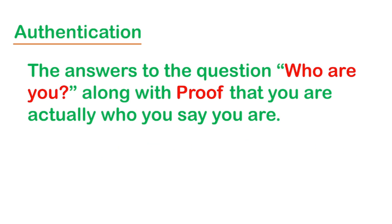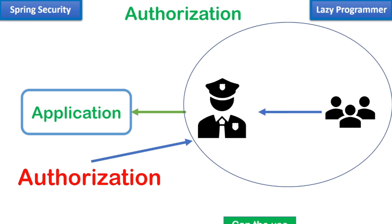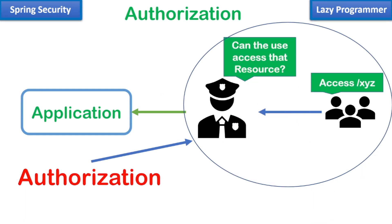To sum up what is authentication: it is the answer to the question who are you, along with the proof that you are actually who you say you are. Now let's move to authorization. After asking who are you, when Spring Security checks what do you want, and based on that decides if you are allowed to access that requested resource or not — the answer will be in the form of yes or no. No password or credentials will be required. In other words, it is answering the question: can this user do what they are trying to do?